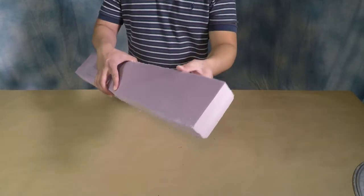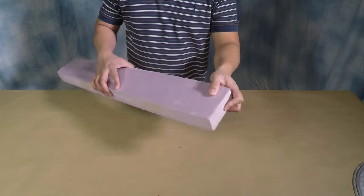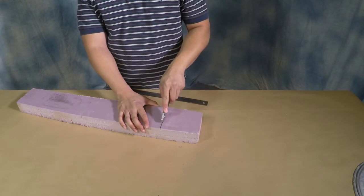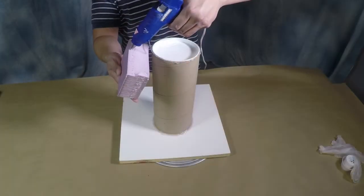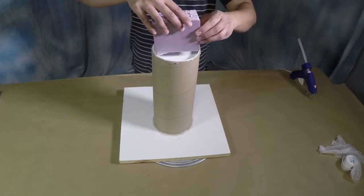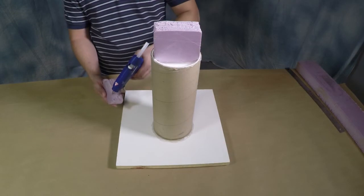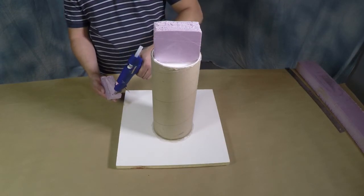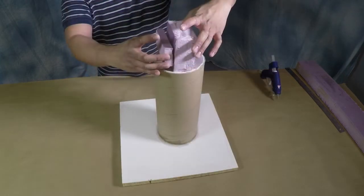Now I happen to have this scrap piece of insulation foam, which I'm going to cut into smaller pieces and add this to the mailing tube. The purpose of this really is just to occupy more volume and give me a working surface that I can sculpt the material onto when I'm making my model.